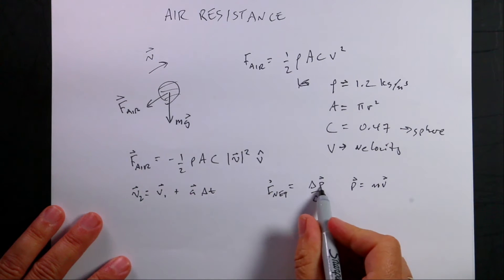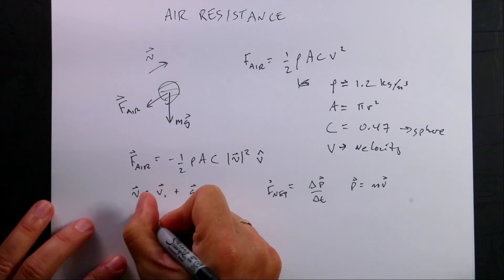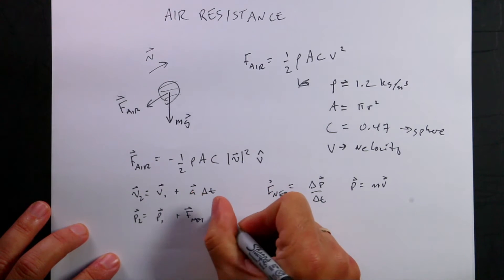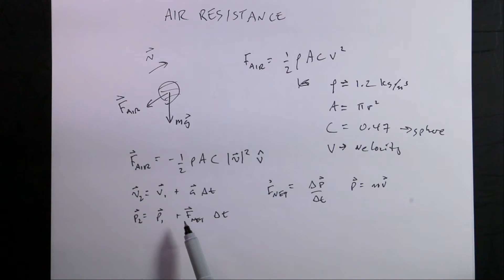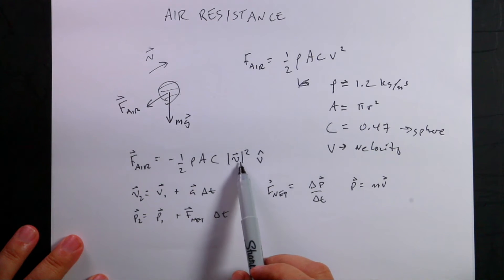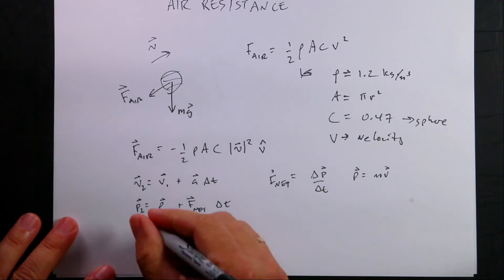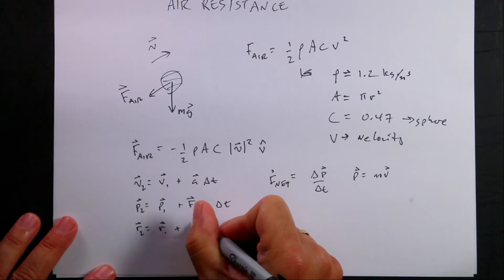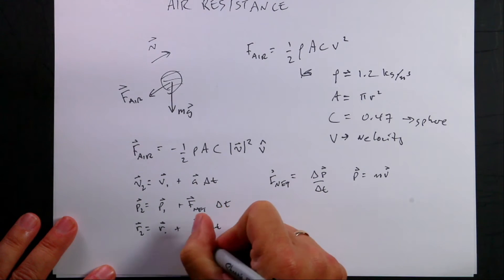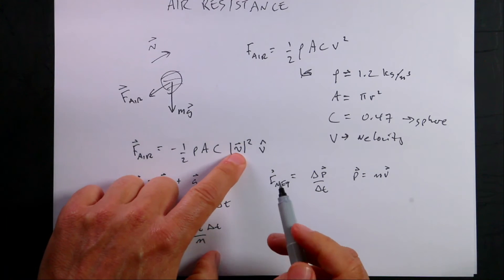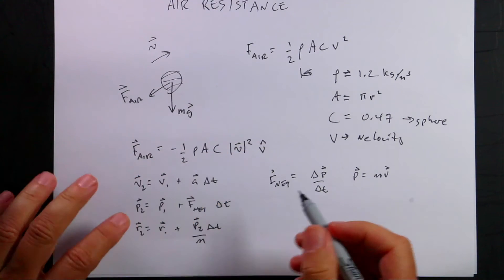So that means if I solve this for p2, I get p2 equals p1 plus f_net delta t. And this just means I can deal with the forces. I don't have to find the force and find the acceleration and update the velocity. Now it does mean a problem because I do have velocity in here. And then I can write the position update r2 is r1 plus p2 delta t over m. So I need to take the momentum divided by the mass.